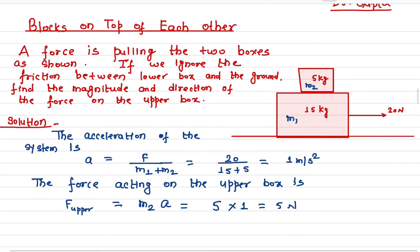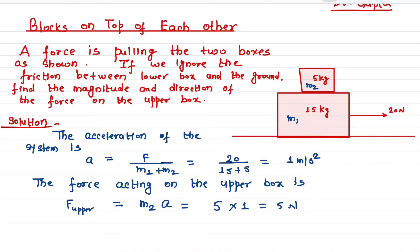When you apply a 20 Newton force and both masses are moving, the force distributes itself such that 5 Newton is acting on the upper mass and 15 Newton is acting on the lower mass. The entire system moves with an acceleration of 1 meter per second squared in the same direction.